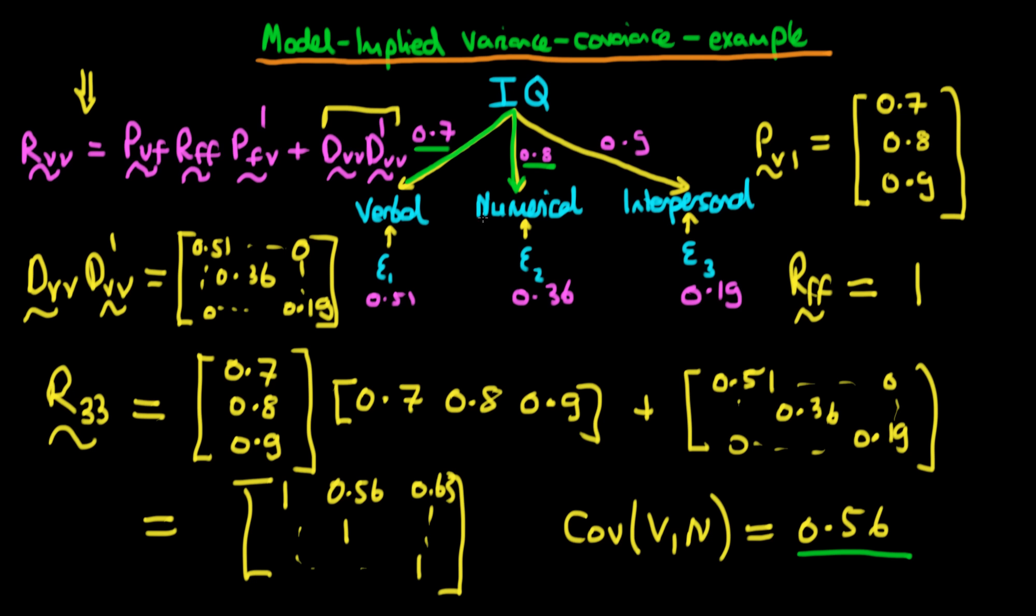Anyway, I hope that this has provided an example as to how we can actually use the matrix notation of factor analysis models in order to derive the model-implied variance-covariance matrices.